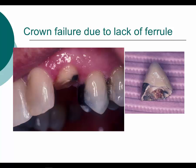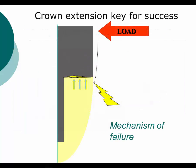When restoring endodontically treated teeth, we need to understand why crowns fail. Looking at this porcelain-fused-to-metal crown, it barely extended onto tooth structure — in fact there was no ferrule. We look at a ferrule as 360 degrees around the tooth, hugging the tooth at the gingival margin. Research shows, especially on anterior teeth with the type of off-axis load being generated, that if we don't hold onto the tooth and root surface, we're going to have flexion, movement, leakage, and ultimately a mechanism of failure.